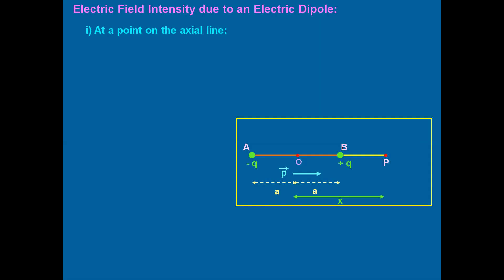The direction of electric field is towards the negative charge and away from the positive charge, so the directions of EA and EB can be marked accordingly. Notice that EA is represented with a smaller line and EB with a bigger line — the value of EB is greater than EA because point B is lying closer to P. So the electric field due to B will be a greater value than the electric field due to the charge located at A.